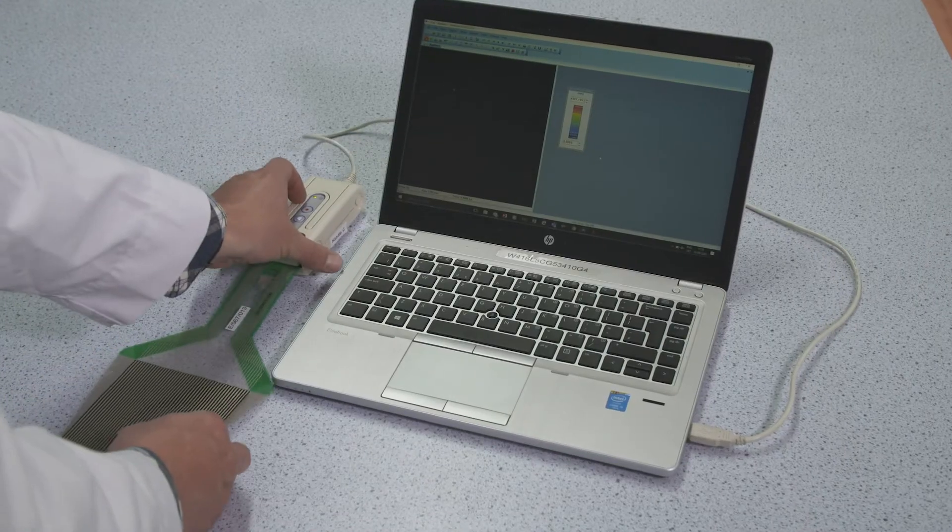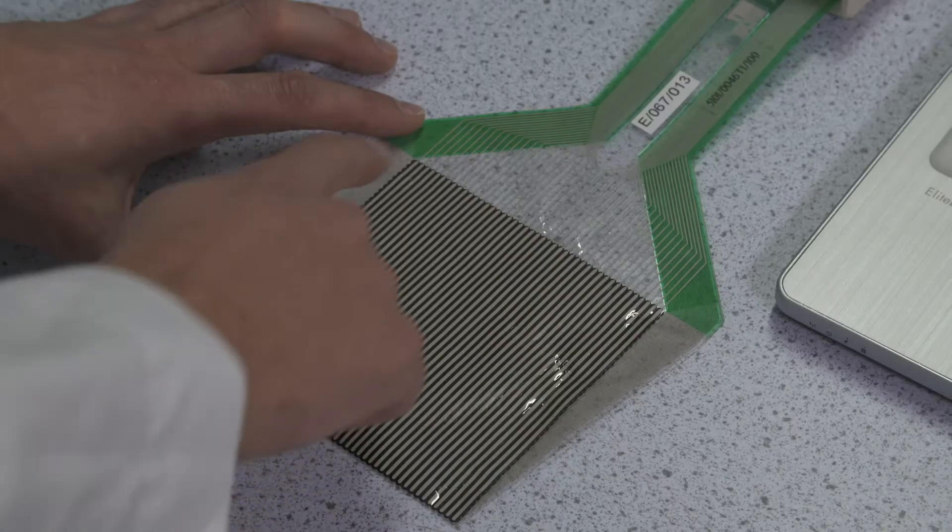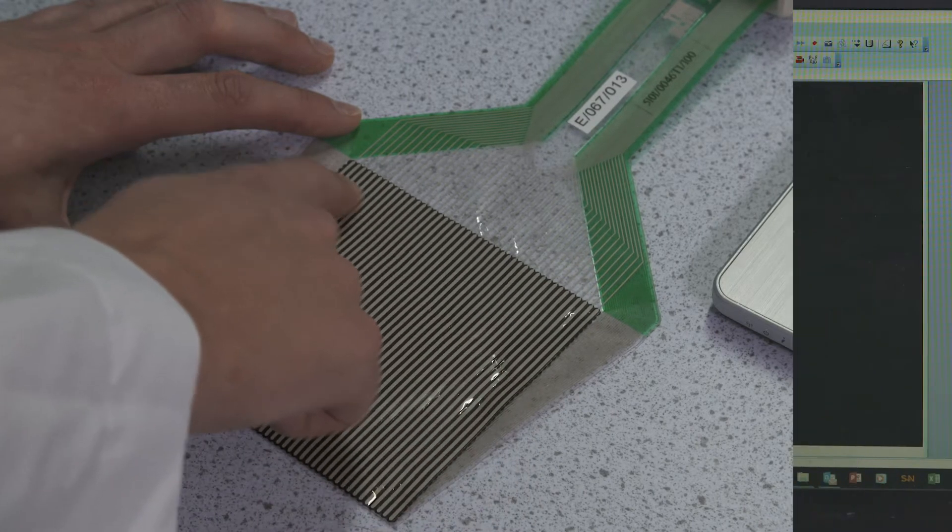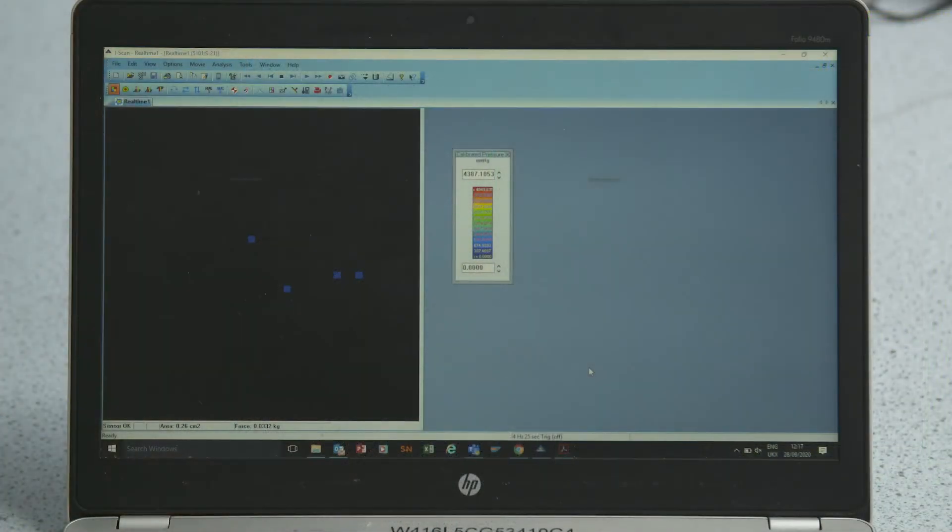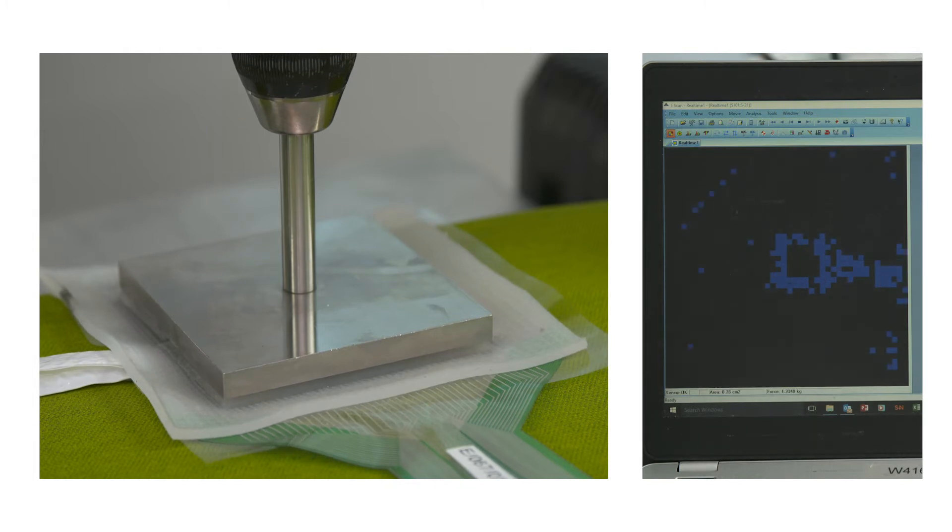We measure this using our calibrated TechScan pressure sensor connected to the computer. This shows the pressure on the simulated skin before the INSTROM plate comes down. Now we can see the pressure on the skin after the INSTROM plate comes down.